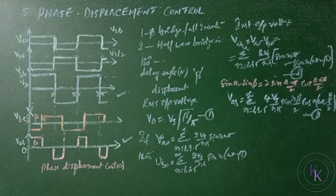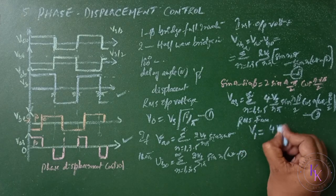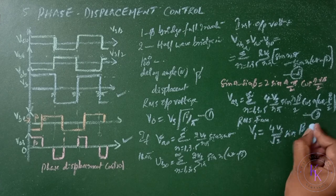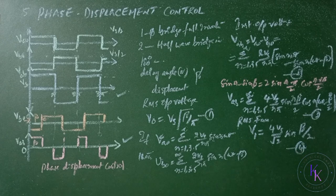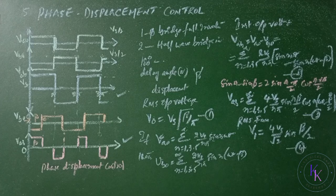Now the RMS value of fundamental output voltage V1 equals 4Vs divided by root 2 times sine beta by 2. This equation indicates that the output voltage can be varied by varying the delay angle beta.